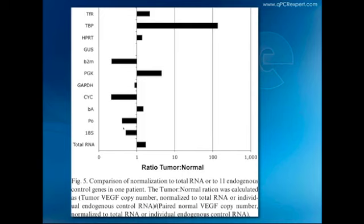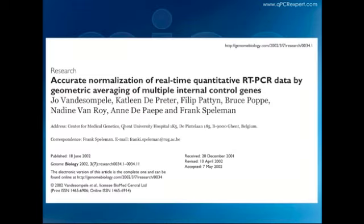It has been clear for a long time that normalization against single reference genes is not a good idea. We published a paper ten years ago showing that depending on what reference gene you choose, you can get completely different results—if you normalize against Tata binding protein you get one result, against beta-2 microglobulin or 18S RNA, another. In 2002, a landmark paper by Jo Vandesompele suggested an approach to overcome problems associated with single reference genes. The key issue is that one should never rely on normalization to a single reference gene.